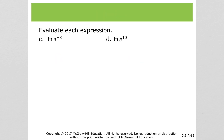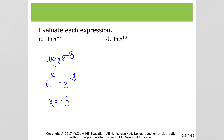This is natural log of e to the negative 3. Natural log of e to the negative 3 is the same thing as log base e of e to the negative 3. We're going to see a shortcut shortly, but right now this is the same thing as e to the x equals e to the negative 3. Back in our exponent rules, if we have the same base, then the exponents are equal. So here x is equal to negative 3.